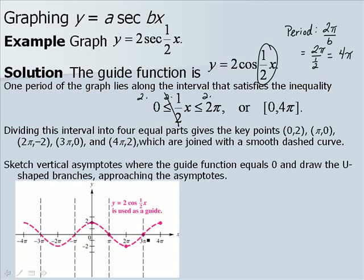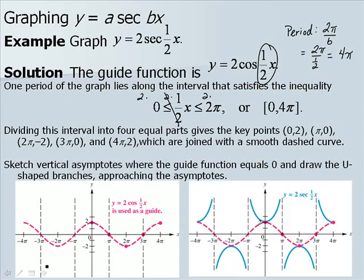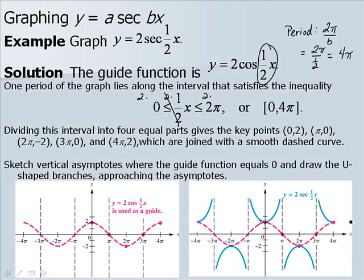Next, sketch the vertical asymptotes where the guide function equals 0, then draw the u-shaped branches approaching the asymptotes. Once the cosine function is drawn, place asymptotes at every x-intercept, then draw the u-shaped branches at the peaks — the maxima and minima — of the guide function. Note that near the edge of the graphed interval you may only have half of a u-shape if the last asymptote isn't drawn. Technically, you erase the guide function once the u-shapes are drawn.